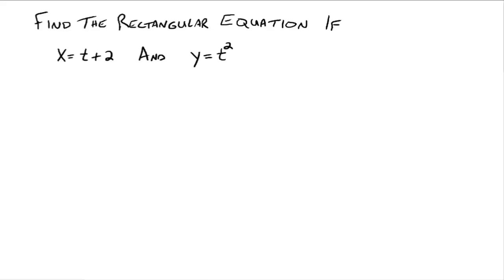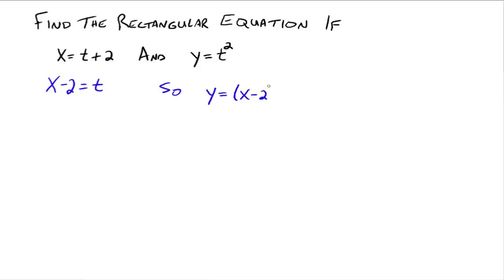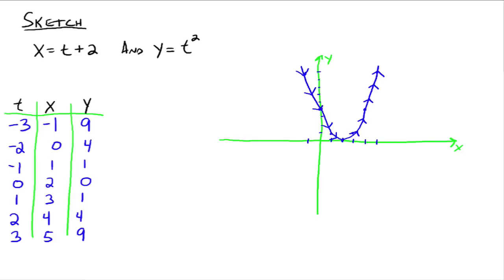Another thing we can do is find the rectangular equation from a set of parametric equations. Using the same two equations from before — x equals t plus 2, y equals t squared — to find the rectangular equation we have to eliminate t. In this case it's easy to isolate t: x minus 2 equals t. Then substitute x minus 2 in for t in the other equation, giving y equals (x minus 2) squared. That is the rectangular equation — a parabola shifted two units to the right, which looks just like the graph we drew but without the arrows.